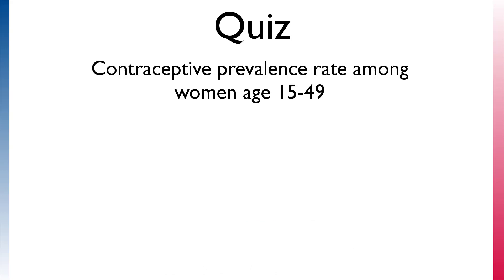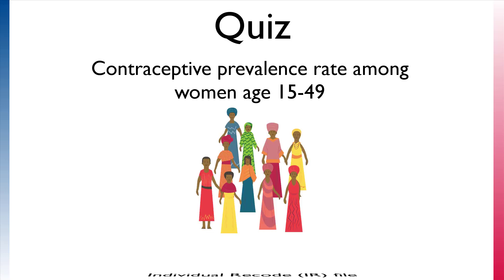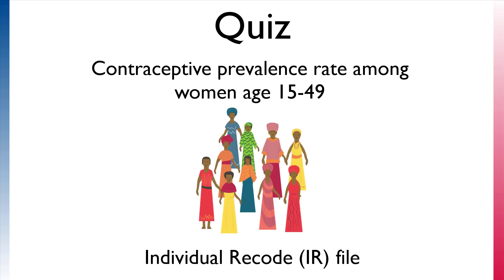How about contraceptive prevalence rate among women 15 to 49? The answer is the women's file, or the IR file, since the unit of analysis is women.